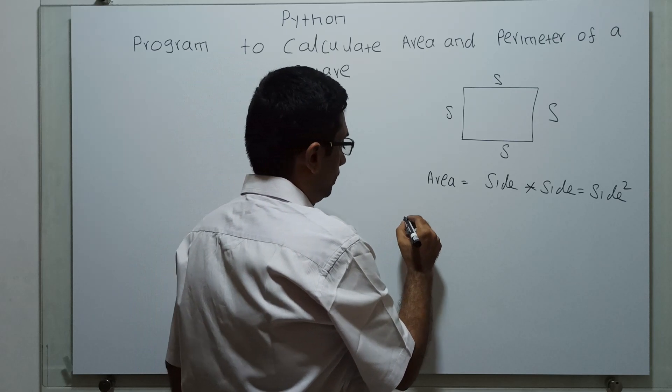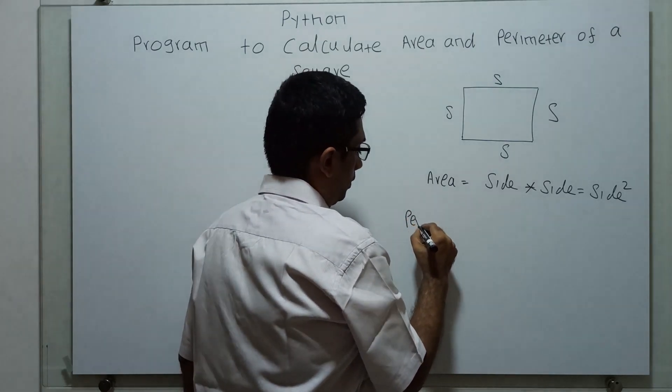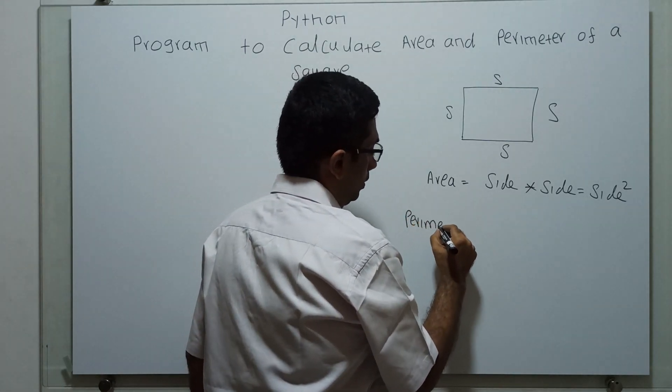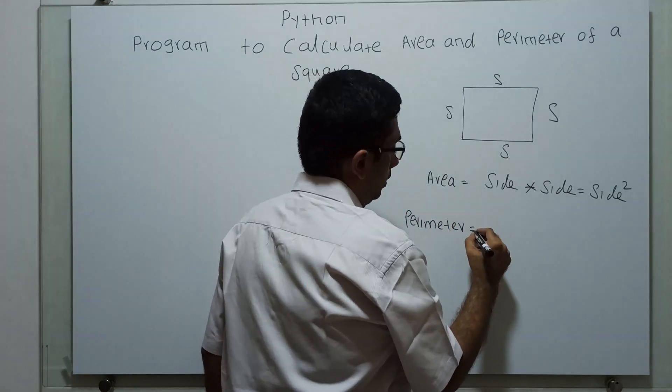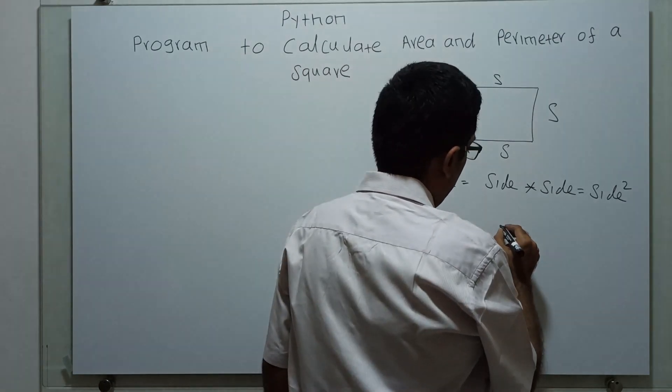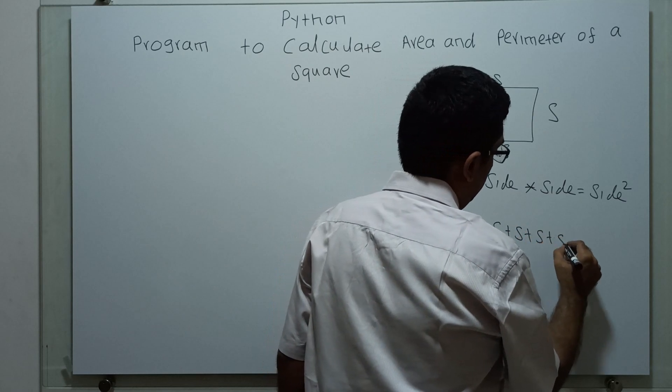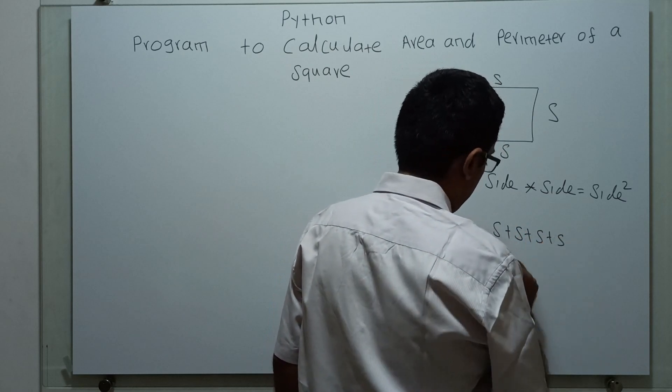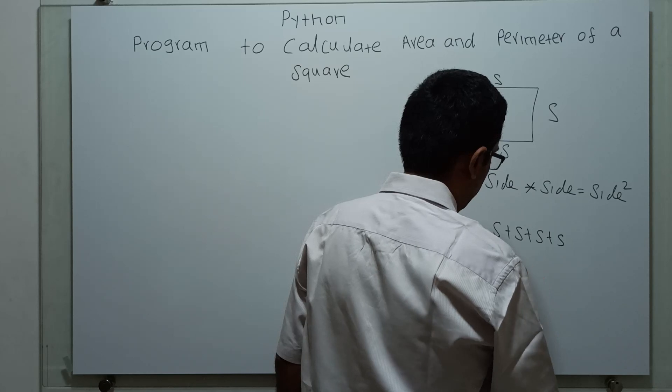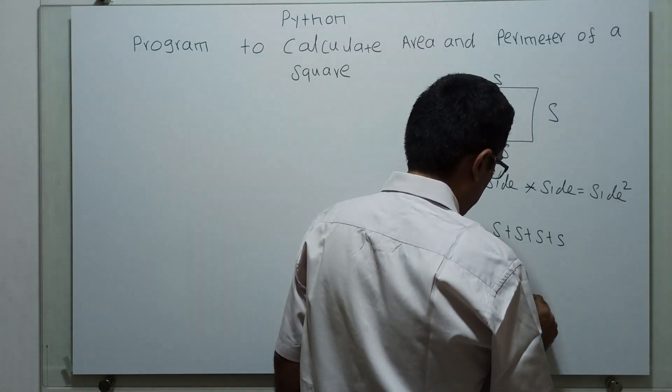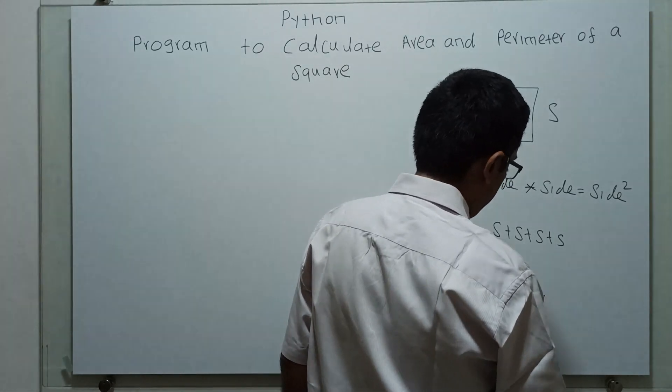Perimeter equals - we have to add the four sides, that is equal to 4S, we can say 4 into S.